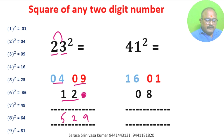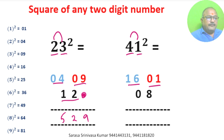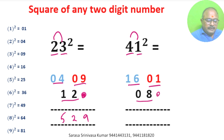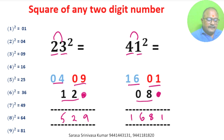41 square: square of 4 is 16, square of 1 is 01. 1 into 4 is 4, into 2 is 8. We don't write anything in units place. 1, 0 plus 8 is 8, 6 plus 0 is 6, 1. 41 square is 1681.